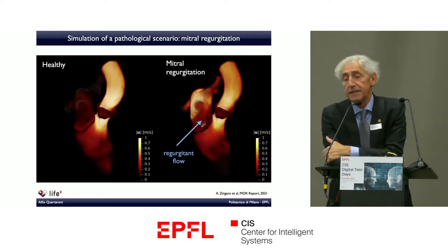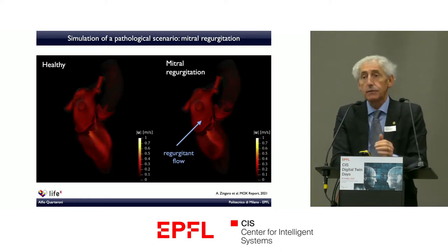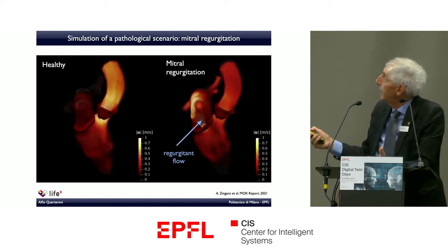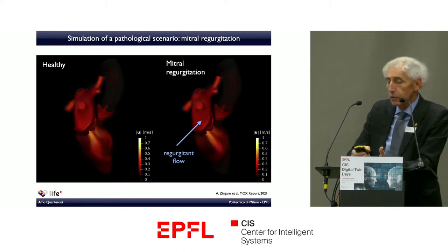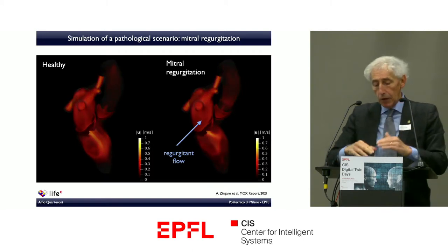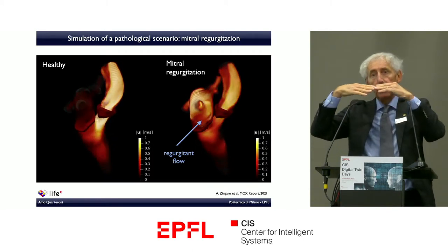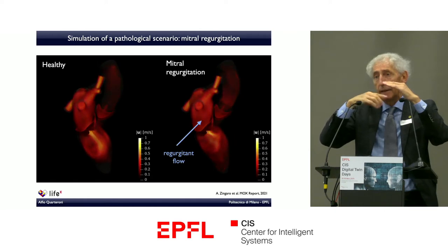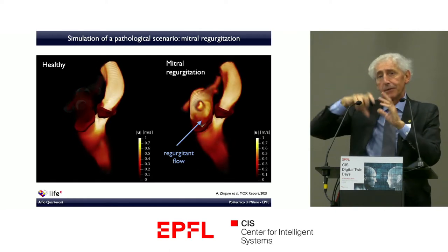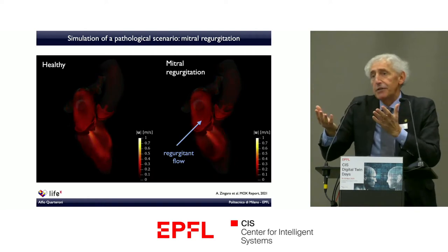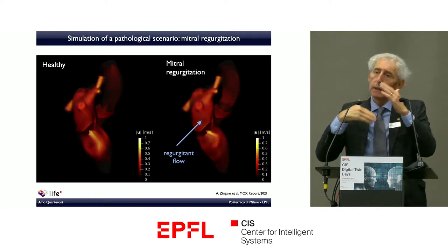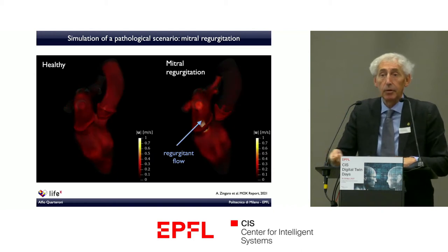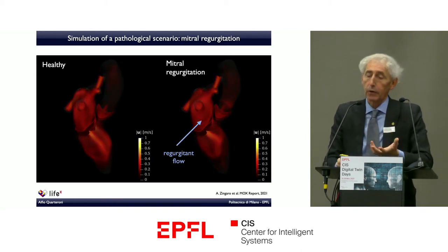At the clinical level, this model is used to simulate mitral regurgitation, which occurs when the mitral valve does not close perfectly, allowing blood to return from the lower to the upper part of the heart. This is dangerous over time because the resulting pressure differential creates fatigue, eventually preventing the valve from working correctly.